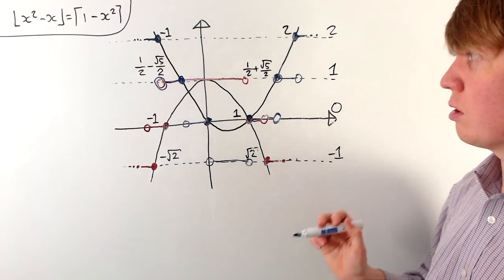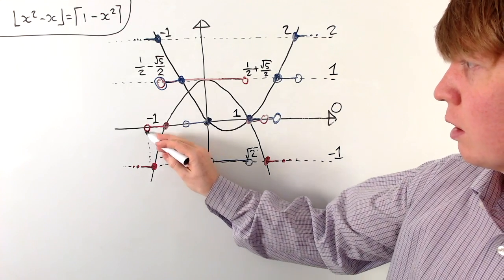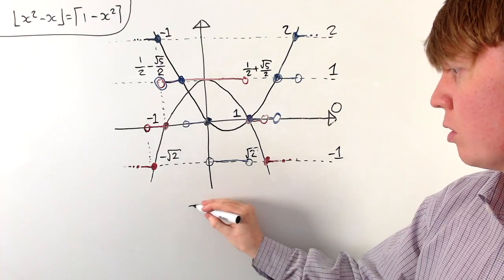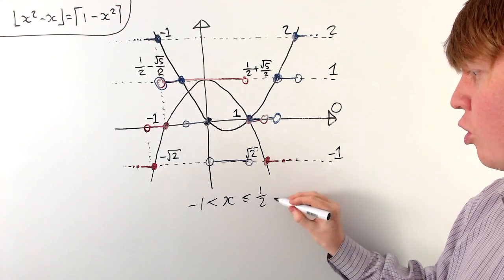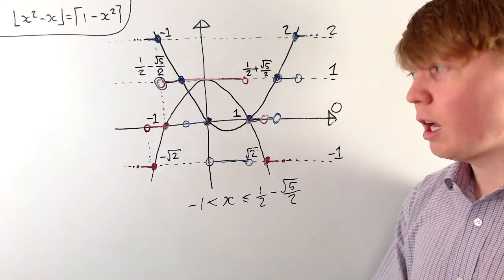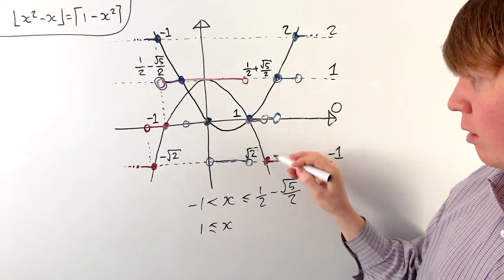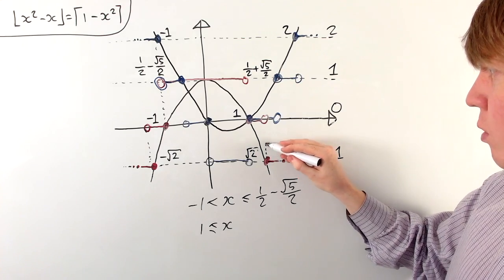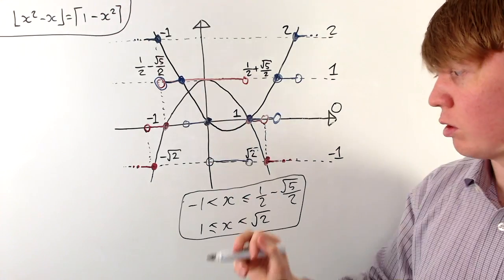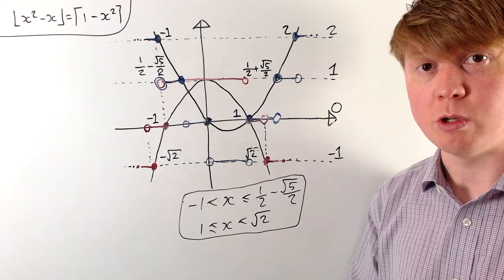We now have two regions of overlap. The first region is minus 1 strictly less than x, which is less than or equal to one half minus root 5 over 2 — here both functions equal 1. The second region is 1 less than or equal to x strictly less than root 2 — here both functions equal 0. So the solution to the equation is all x in the interval (minus 1, one half minus root 5 over 2] union [1, root 2).